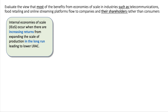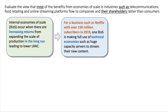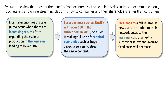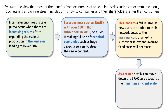Internal scale economies occur when there are increasing returns from expanding the scale of production in the long run, leading to a fall in average costs. Start with a nice clear definition, then a bit of application: for a business such as Netflix, with over 150 million subscribers, one economy of scale is making full use of technical economies — production economies such as huge capacity servers installed and used to stream their content. This leads to a fall in average costs as new users are added to their network, because the marginal cost of an extra subscriber is pretty low, and therefore average fixed costs will decrease. As a result, Netflix can move down the long-run average cost curve towards the minimum efficient scale.